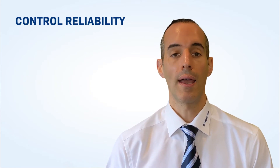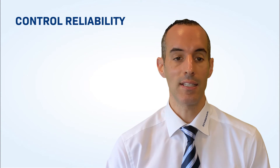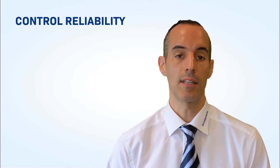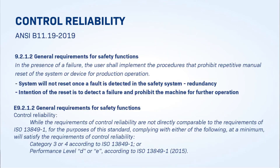Control reliability comes from various ANSI consensus standards and NFPA. If we take an example consensus standard such as ANSI B11.19, it does discuss control reliability and actually breaks it down for us, converting it to category 3 or category 4.